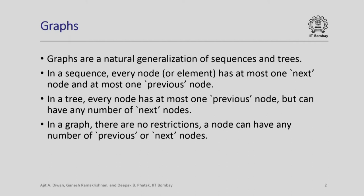A node can have any number of children but it will have at most one parent. A graph is obtained by just relaxing all these conditions — in a graph a node can have any number of previous or next nodes.